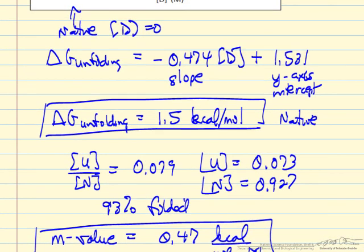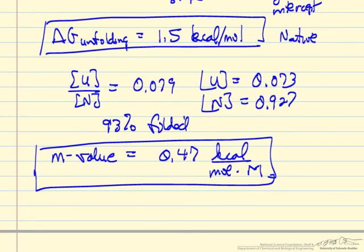And so we've now calculated the information about stability of the protein in the presence and absence of denaturant, and then a value that's used in characterizing the stability as a function of the urea concentration.